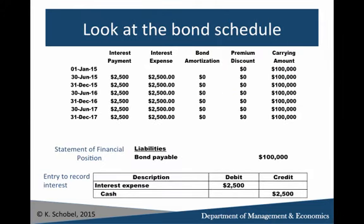Looking at the schedule, assuming we issued the bond on January 1st, the carrying amount is $100,000. The first payment happens on June 30th — we pay $2,500, and the interest expense is also $2,500. There is no amortization and no premium or discount. When a bond is at par, the payment and the interest expense are exactly the same. On the statement of financial position, you'll have one line saying bond payable for the carrying amount. Each time you record interest, you debit interest expense and credit cash for the same $2,500.